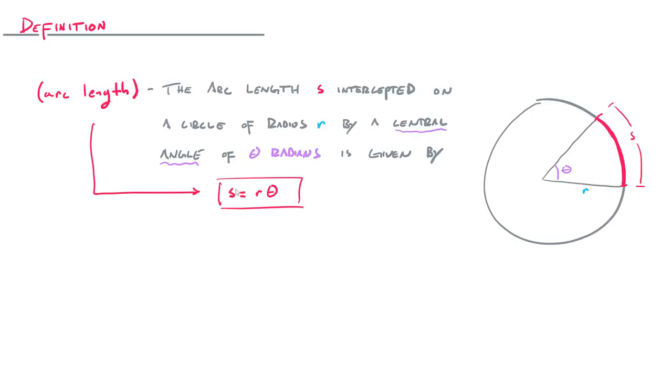The formula is made up of three different variables. The arc length s, intercepted on a circle of radius r by a central angle of theta radians is given by s equals r times theta. So a couple of takeaways here. One, theta has to be in terms of radians and s is the name that we give, the variable name that we give for arc length.